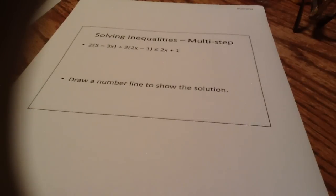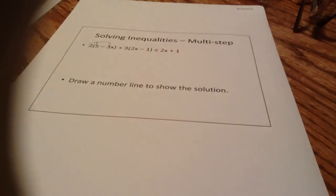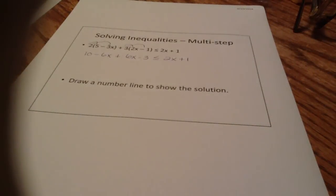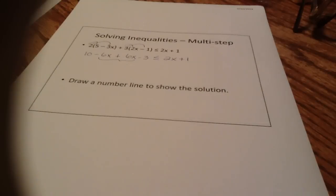Here's another multi-step — a lot of distributing in this one. We're going to multiply 2 times 5 and 2 times negative 3x, getting 10 minus 6x, then distribute the 3 to get 6x minus 3, all less than or equal to 2x plus 1. Combining like terms: negative 6x plus 6x cancels, and 10 minus 3 is 7, giving us 7 is less than or equal to 2x plus 1.